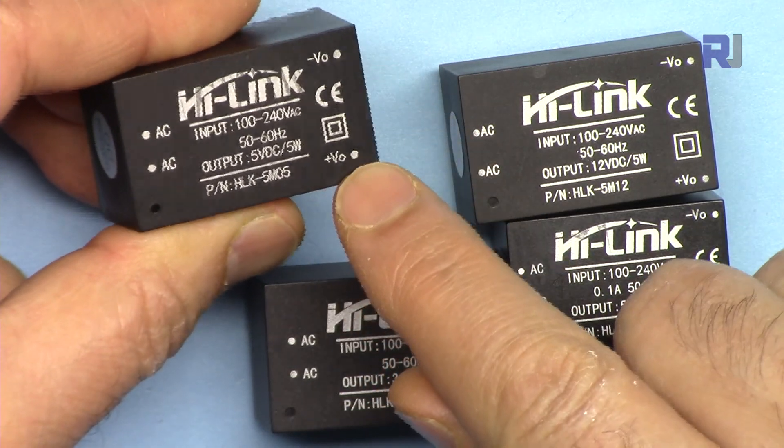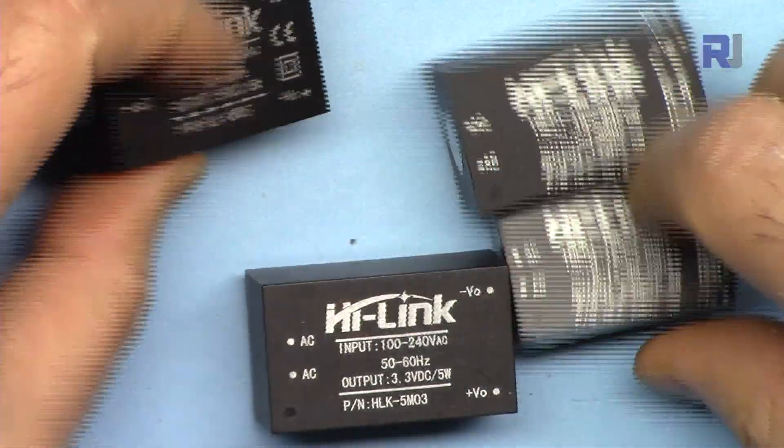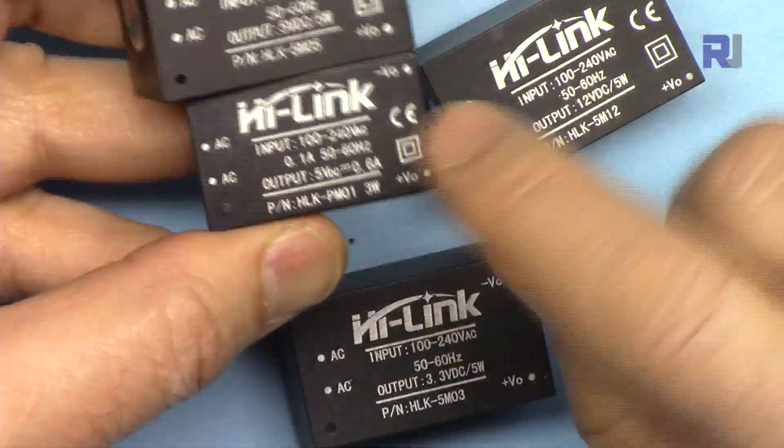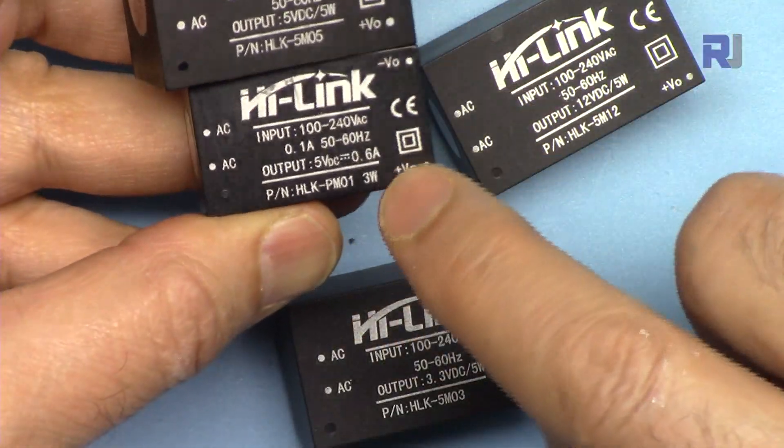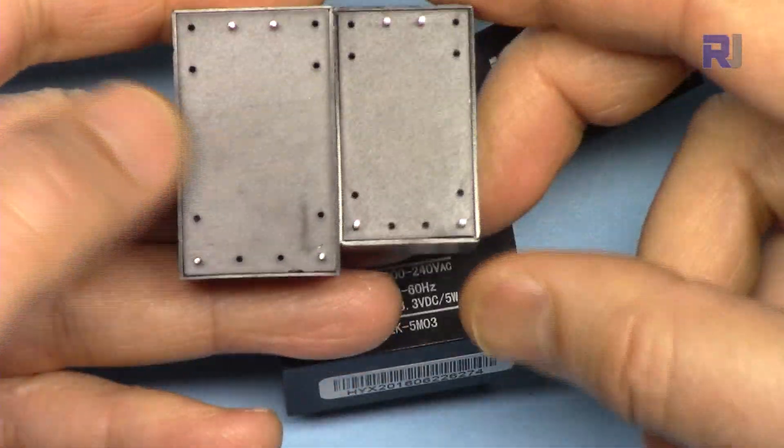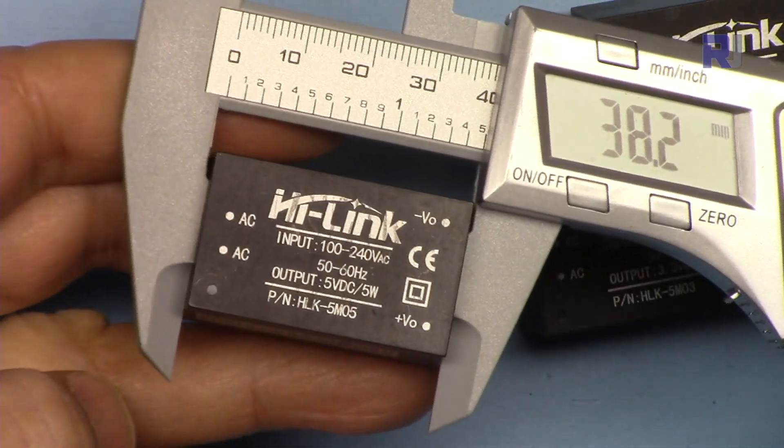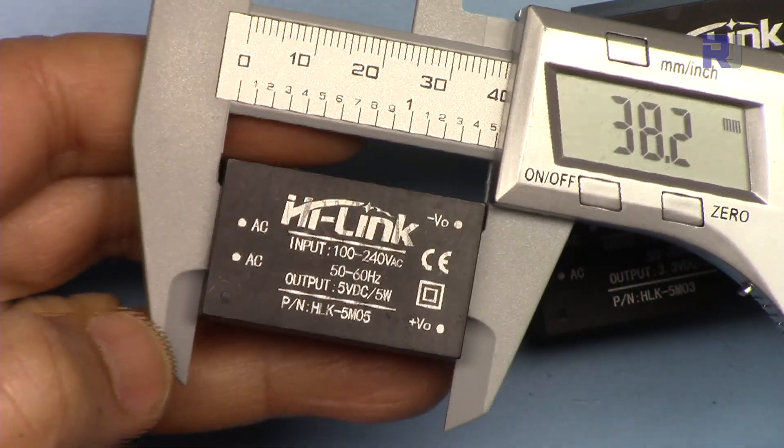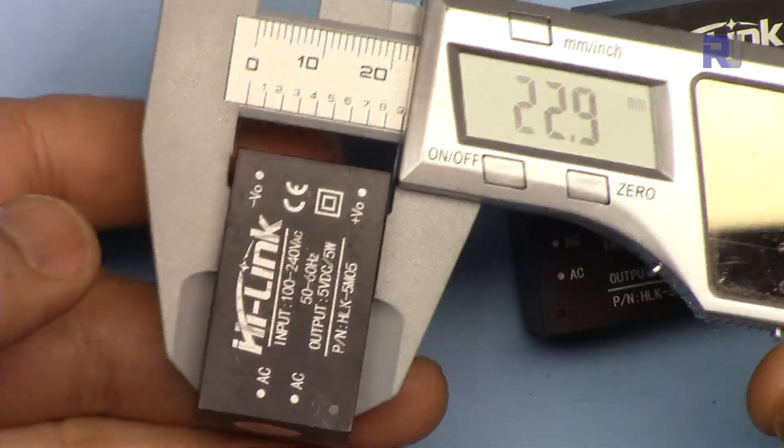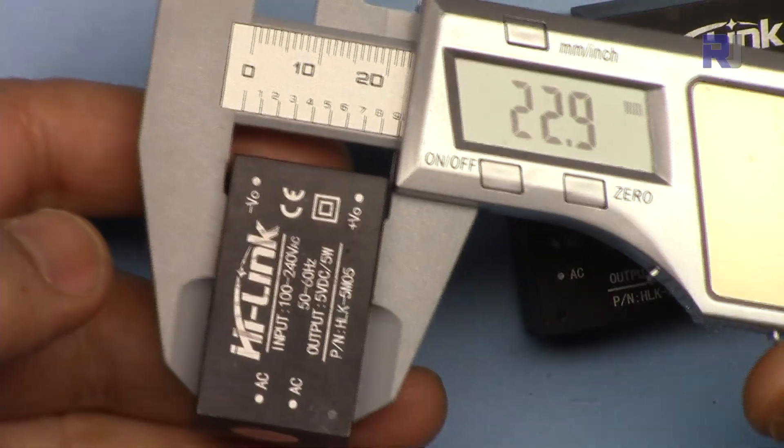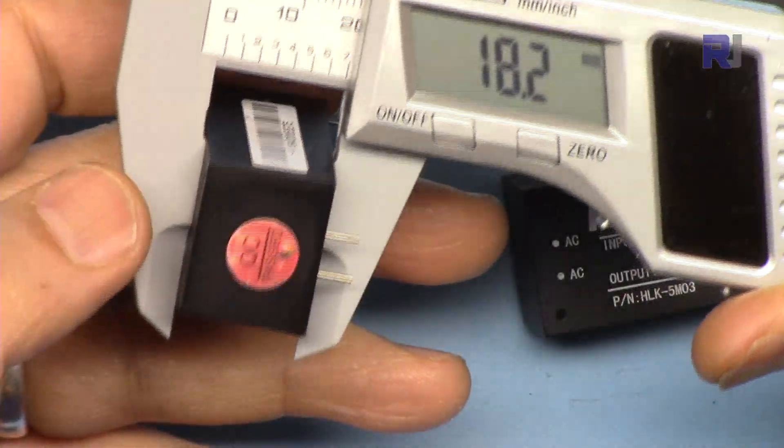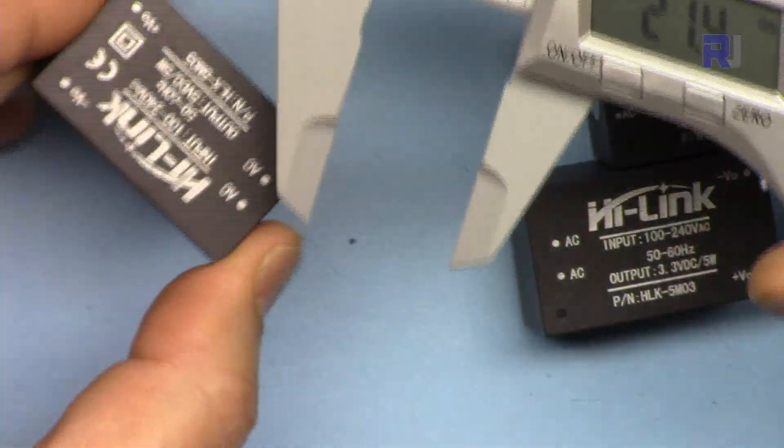As you can see here we have the 5 watt and the 3 watt, and there's a size difference. The width of the module is 38.2 millimeters by 22.9, so this is 23 millimeters, and the module itself is 18.2 millimeters. This is the 5 watt module.